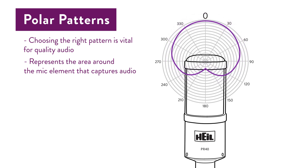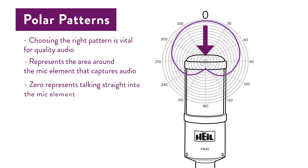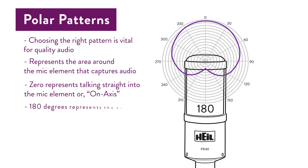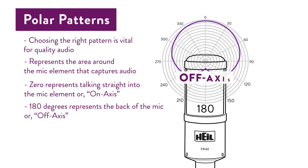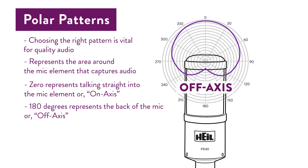Note that at the top there's a zero. This zero represents talking straight into the mic element, or what we call on axis. And 180 degrees represents the very back of the microphone. You will hear people talk about the rejection of a microphone at 180 degrees off axis — this is what that's referring to. Anytime you get further away from zero, you are further off axis. We will talk more about rear rejection later.